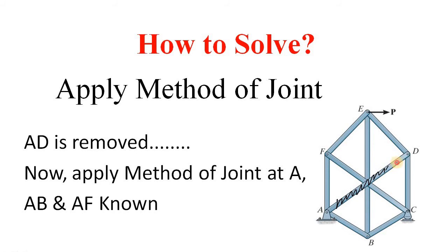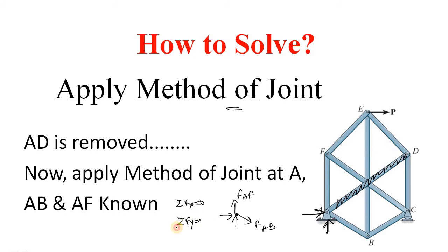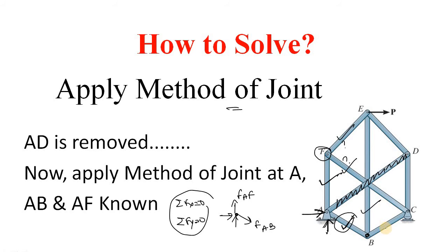When member AD is removed and we apply the method of joint, at joint A the reactions Va and Ha are known, so there are only two unknowns — the force in member AF and the force in member AB. By using summation of Fx equals zero and summation of Fy equals zero, we can find the forces in members AF and AB. Once those are known, at joint F there are only two unknowns, which we can also find. Similarly, at the next joint, as those forces are known, we can find the forces in the remaining members.